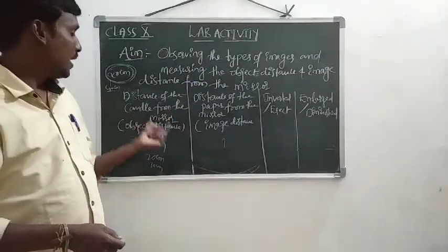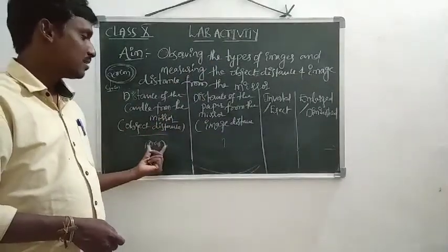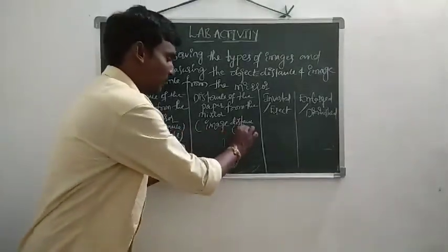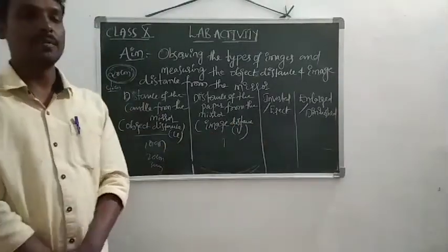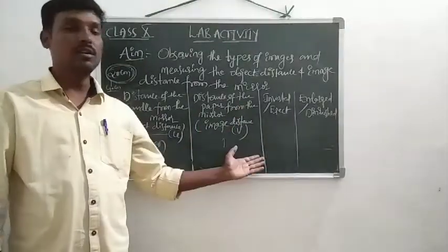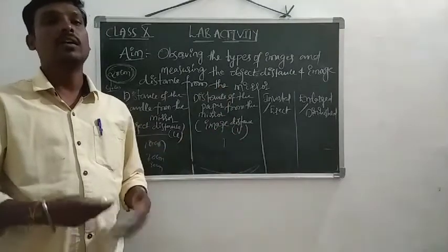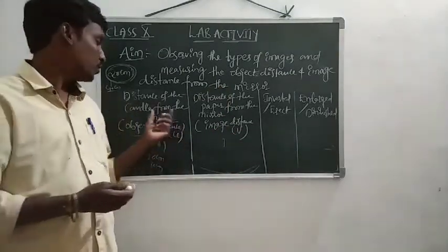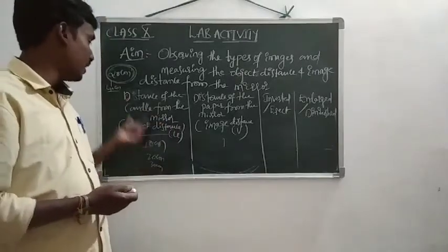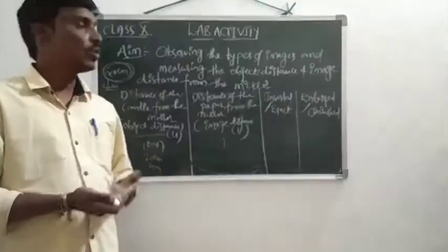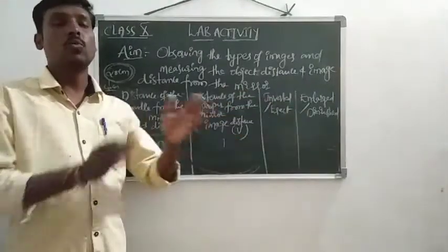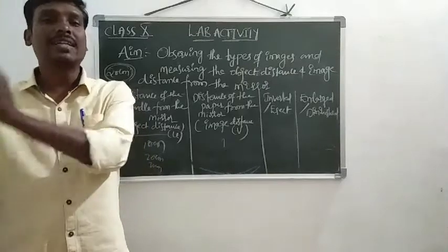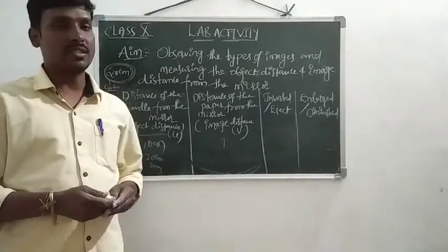We need to maintain the object distance — known as u — and the image distance — known as v — in the table. This is table number one. In the next class, we will discuss the readings: where we get the image, what are its characteristics, the position of the object, and the image position.